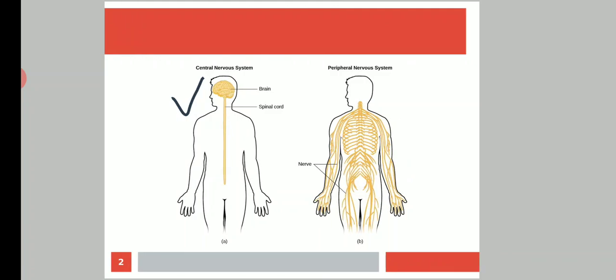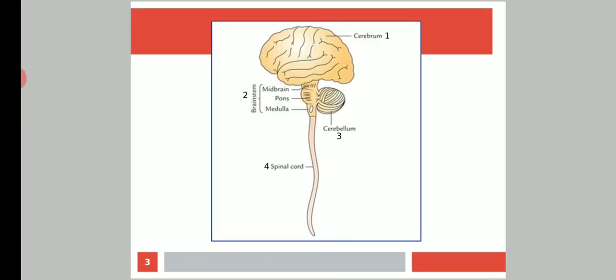The central nervous system has four distinctive parts: the cerebrum, brain stem, cerebellum, and spinal cord.